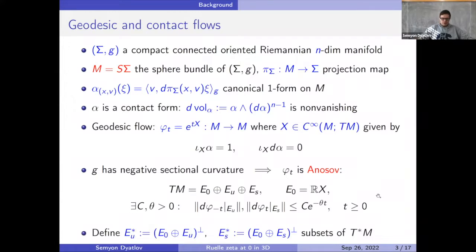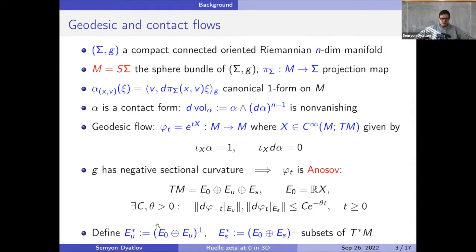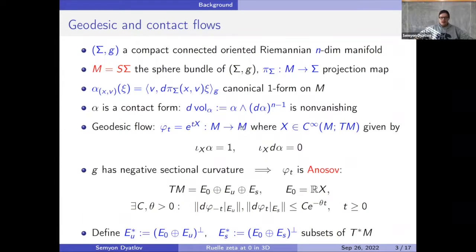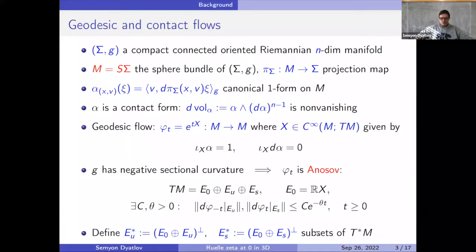For later use, since I'll be using microlocal analysis — which is better done on the cotangent bundle than the tangent bundle — I define the dual stable and unstable sub-bundles of the cotangent bundle to M. Note M is the sphere bundle over Σ, but don't think about Σ; just think of the geodesic flow on M and its tangent and cotangent spaces. The order of stable and unstable is switched in the dual, which makes things convenient later.